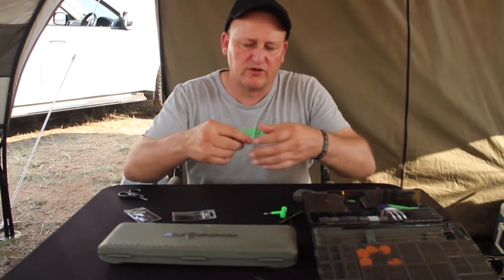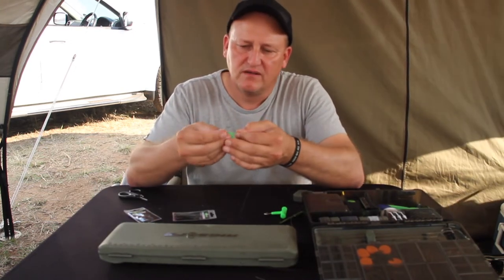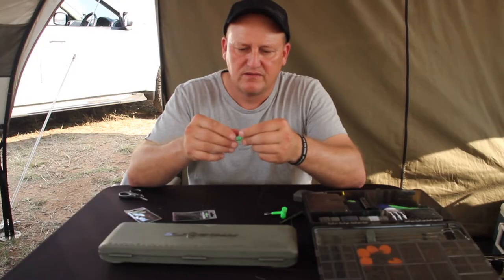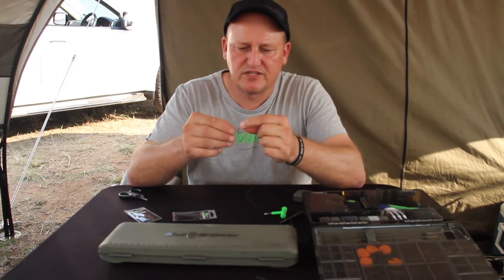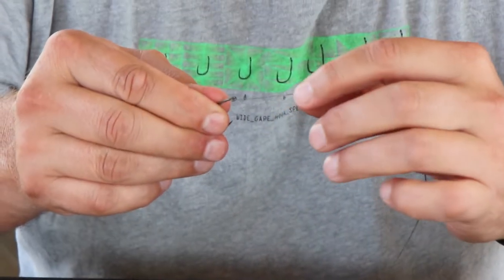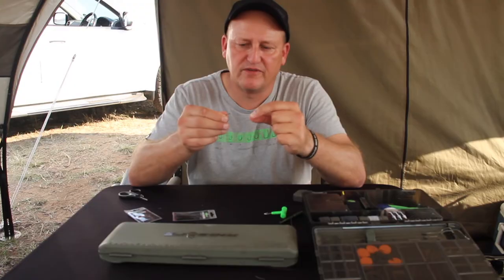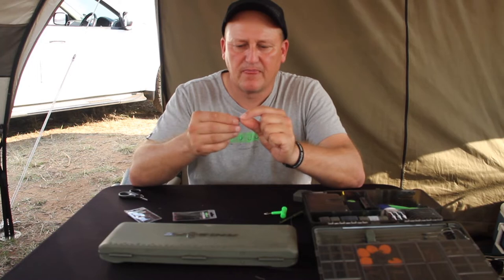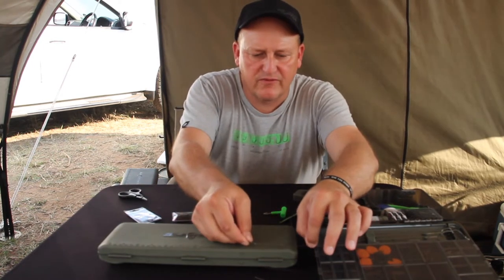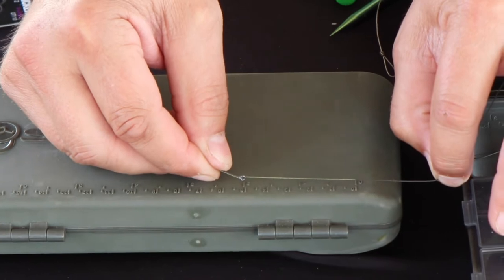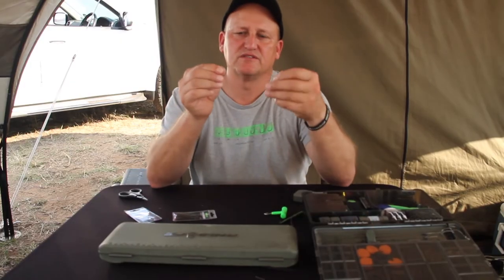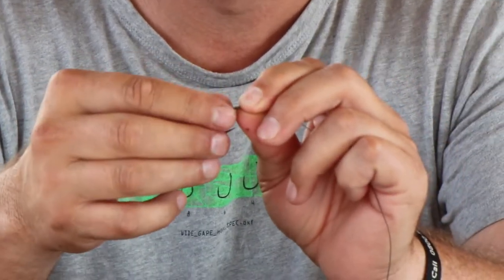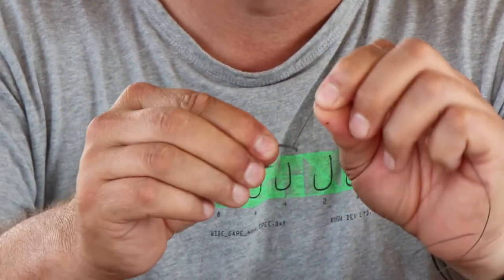The easiest part in this rig, obviously we're going to make a knotless knot. What I'm going to do is just measure that I do not have too little of the uncoated braid left over. Let's just measure that for my sanity and yours. 5 centimeters from the eye of the hook to the uncoated part. So I've only got a very small tag end and I'm going to make a knotless knot.